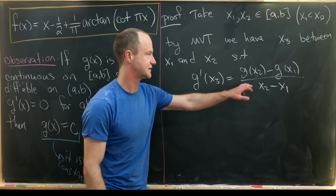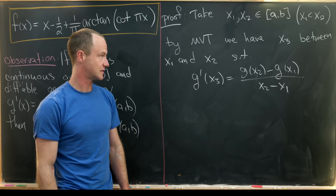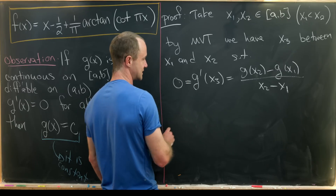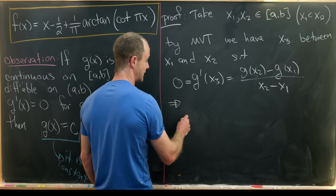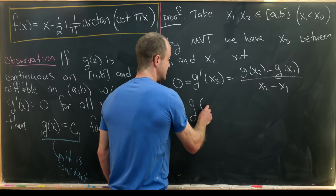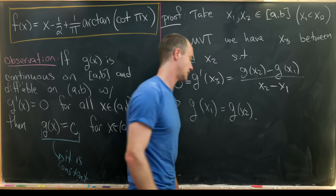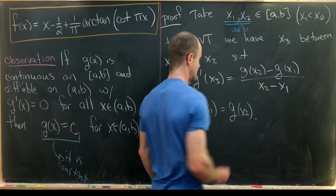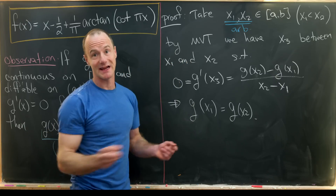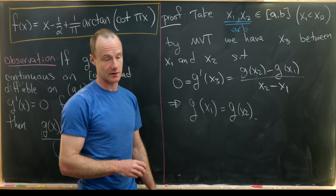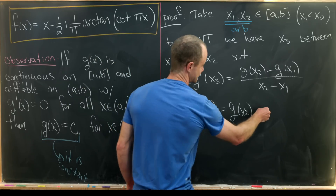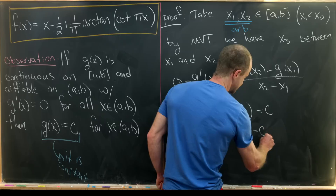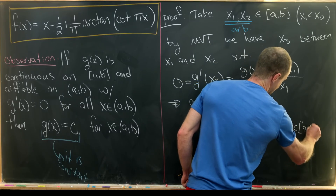That instantaneous rate of change equals the average rate of change. But we've assumed the derivative is always equal to zero. So that fraction equals zero, which means the numerator is zero, giving us g of x1 equals g of x2. Since x1 and x2 were chosen arbitrarily, this equality extends over the whole interval. So g of x equals a constant for all x on [a, b].